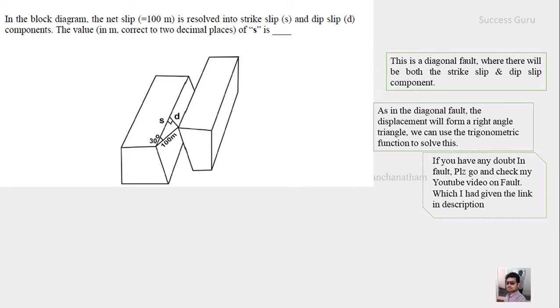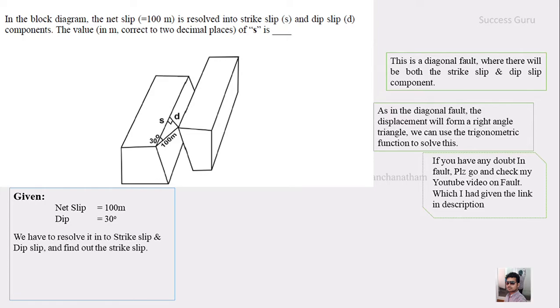And if you have any doubt in this, please check my YouTube video on faults which I will give you the link in description. So they had given the net slip that is 100 meter and the dip of the fault that is 30 degree. So we have to resolve the net slip into strike slip and dip slip components. And if you see the figure, that is the dip slip and this is the strike slip.